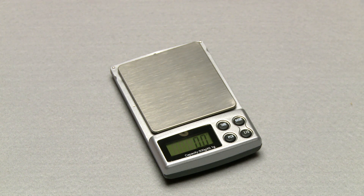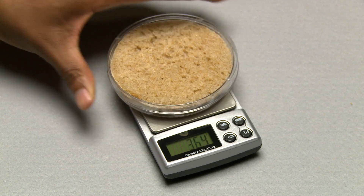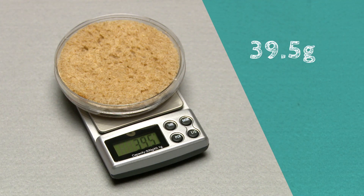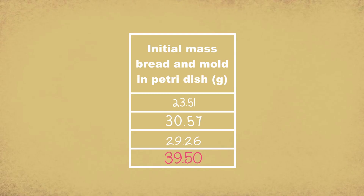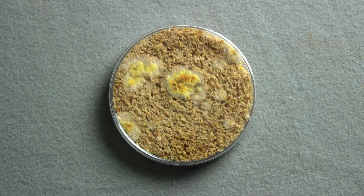We started by putting some moist bread in petri dishes. Then we weighed the bread in the petri dishes. Our bread started out at 39.5 grams — that's before the mold started growing. That's right in line with the sample data from another classroom. Then we waited for the bread to mold. It took about a week.